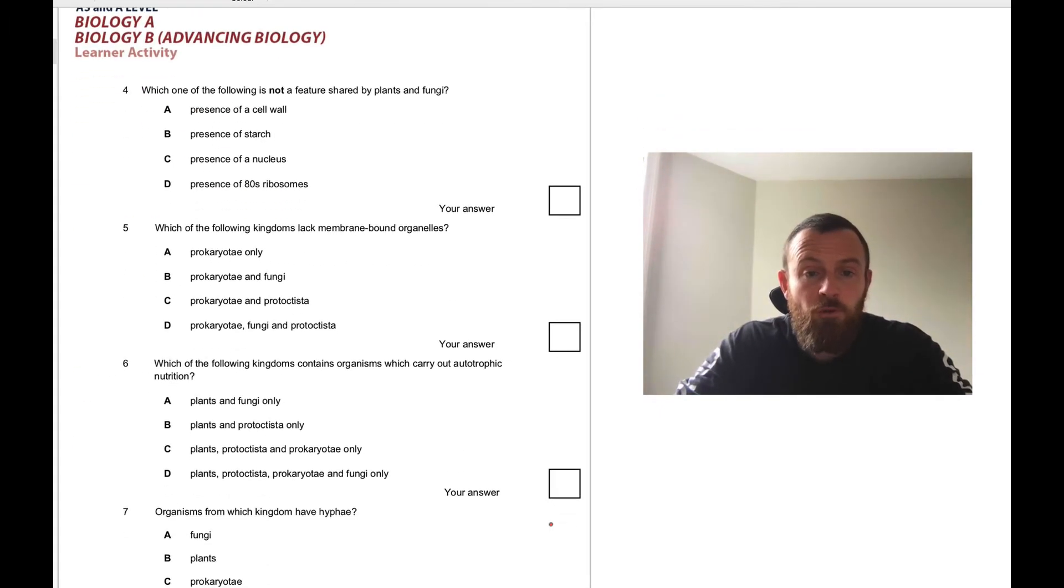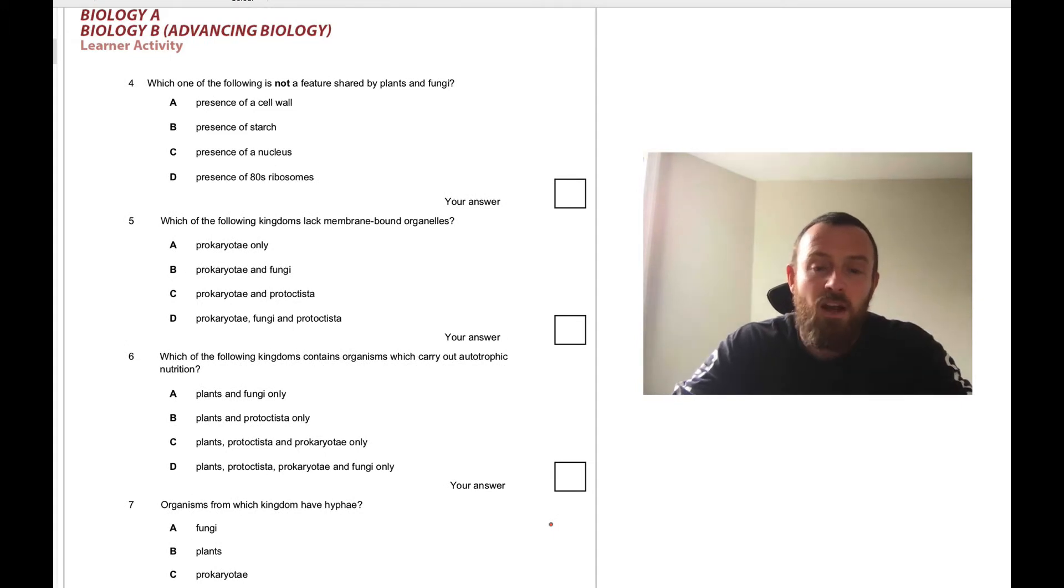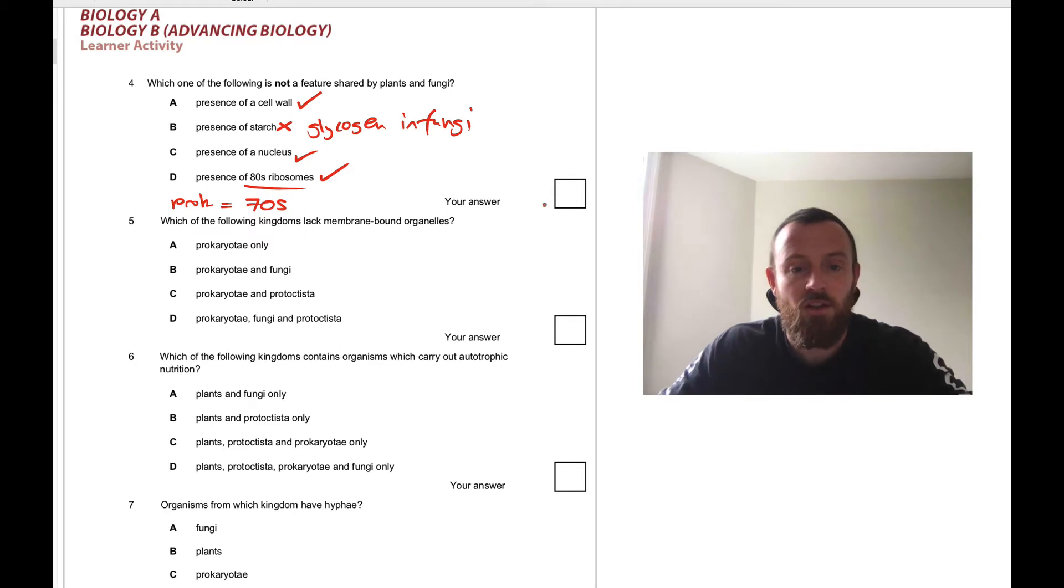Which one of the following is not a feature shared by plants and fungi? Presence of a cell wall? Yes, plants have cellulose, fungi have chitin. Presence of starch? No, I think not, because plants have starch, animals and fungi have glycogen. Glycogen in fungi. Let's just double check and keep going. Presence of a nucleus? Yep, they're both eukaryotes. Presence of 80S ribosomes? Yes, that's true. Remember prokaryotes, bacteria have 70S ribosomes which is slightly smaller. Prokaryotes equals 70S. So the answer is therefore B.